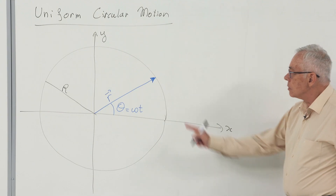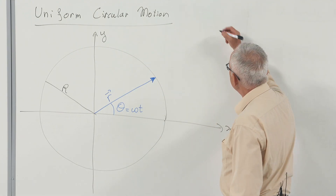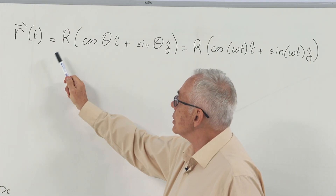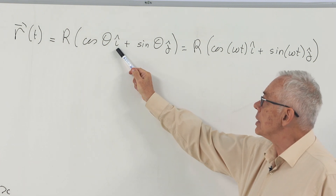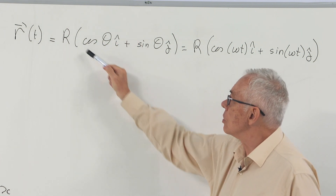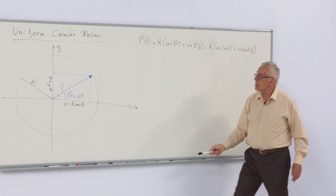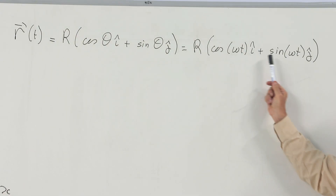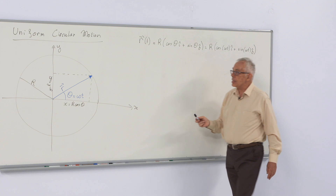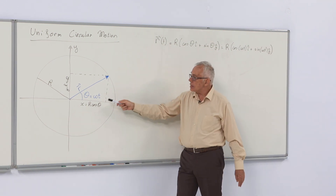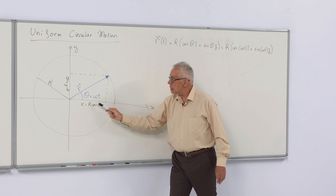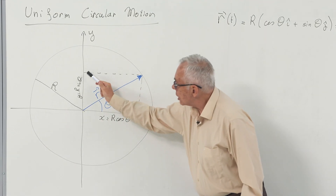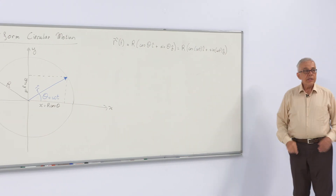So what is the position vector at a given time? The position vector is given as r times cosine theta in the i direction, giving the x component, and sine theta in the j direction. If we look at the figure, we can see that the x component of this point is r cosine theta, and the y component is r sine theta.